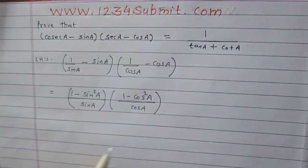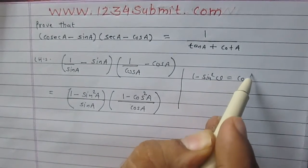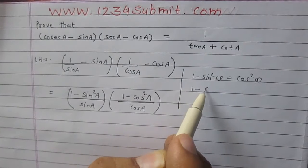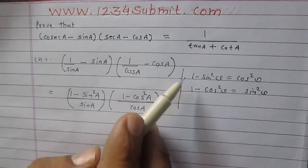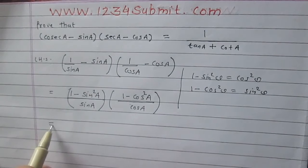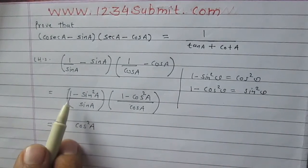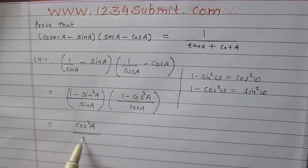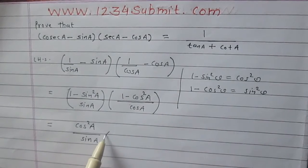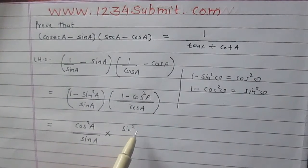Now according to the trigonometric identities, we know that 1 minus sin squared theta is cos squared theta, and 1 minus cos squared theta is equal to sin squared theta. Using these two identities, we can write the left hand side as: instead of 1 minus sin squared theta, I have written cos squared theta upon sin A. The second term is 1 minus cos squared theta upon cos A, which becomes sin squared theta upon cos A.